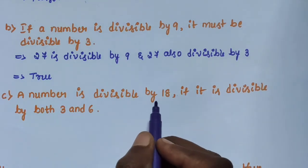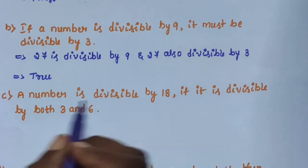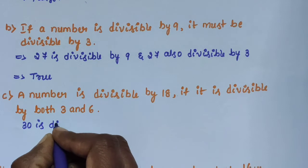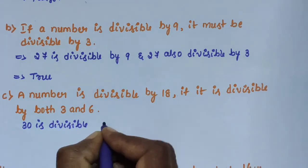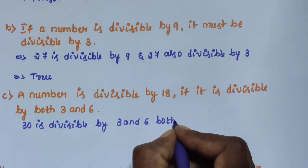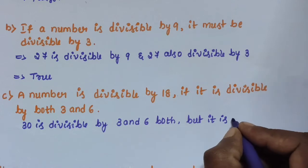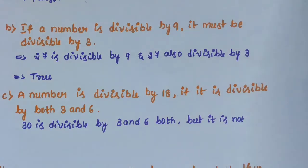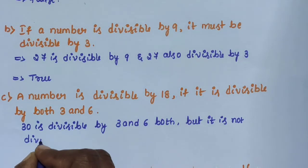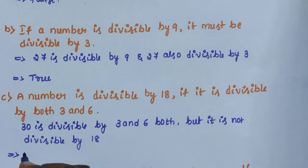Sub-question C: a number is divisible by 18 if it is divisible by both 3 and 6. This statement is false, because 30 is divisible by both 3 and 6, but it is not divisible by 18.